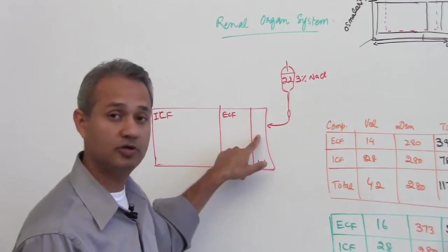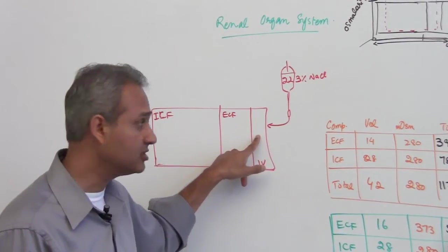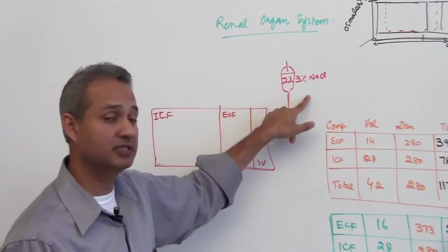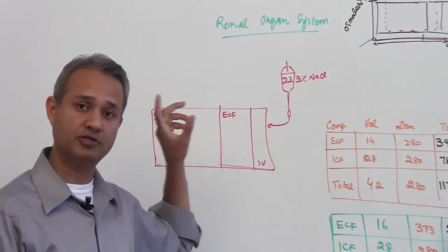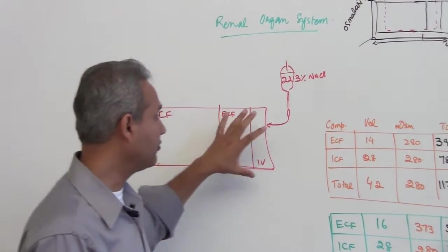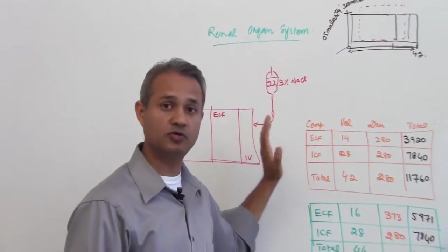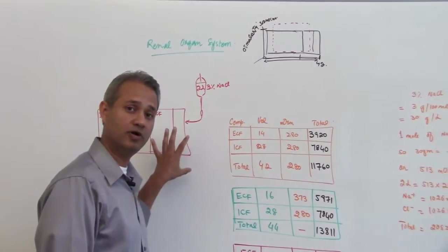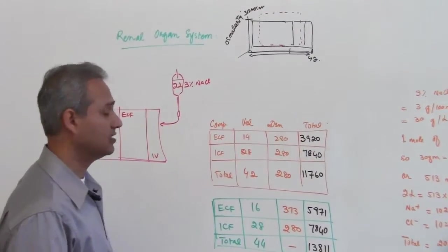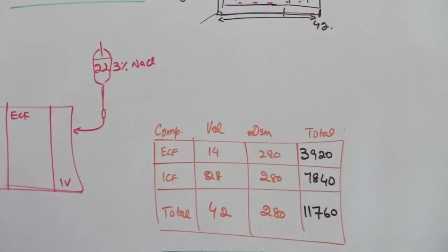So here the change is going to appear of course in the intravascular system. 2 liters of 3 percent sodium chloride is going to be infused. So let us say before infusing the sodium chloride into this person's body, his state was this way.